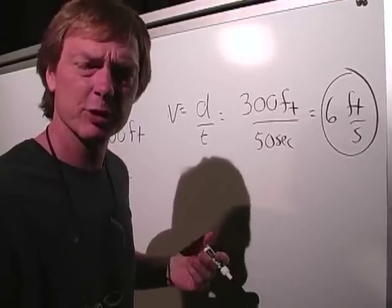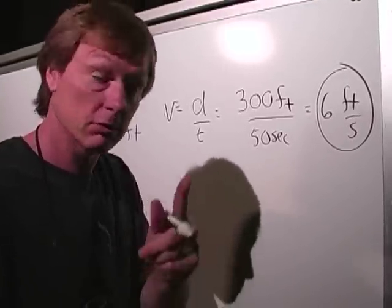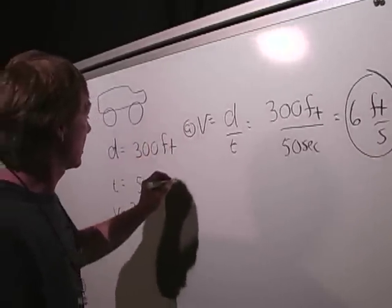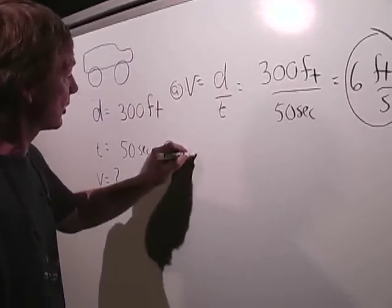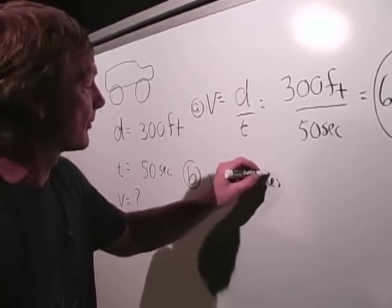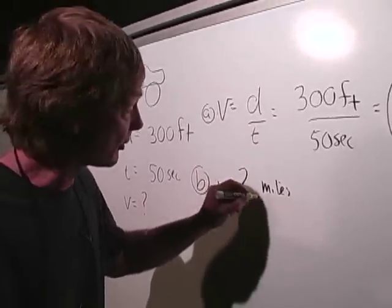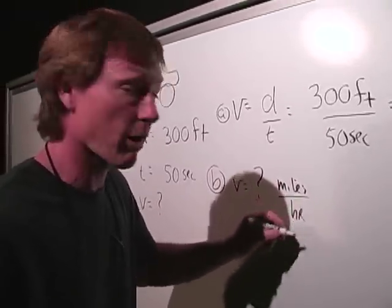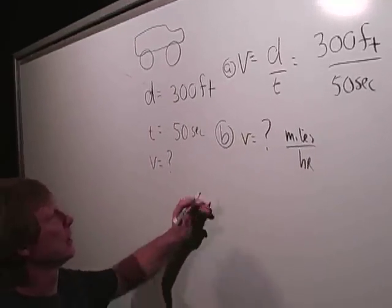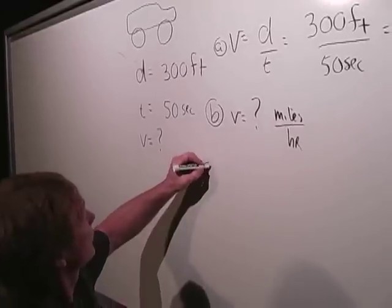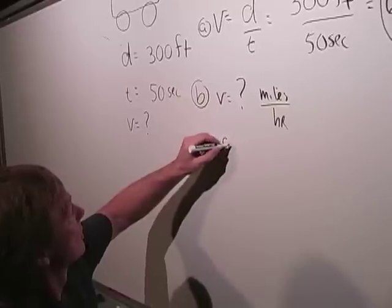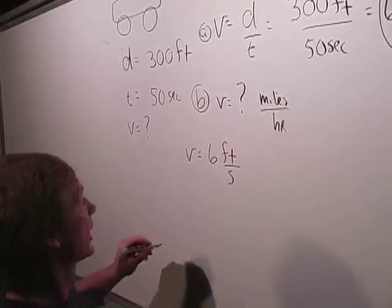We should do a conversion for that too. So that was A. And B, what's the velocity in miles per hour? Instead of mph, I'm going to say miles over hour, so we can keep track of what units are on top and what are on the bottom. So velocity equals 6 feet per second.